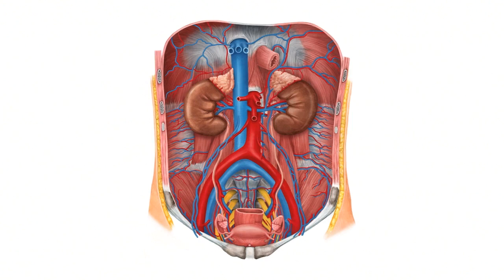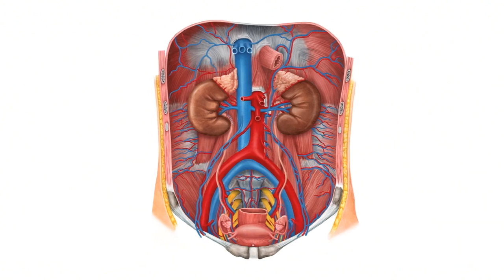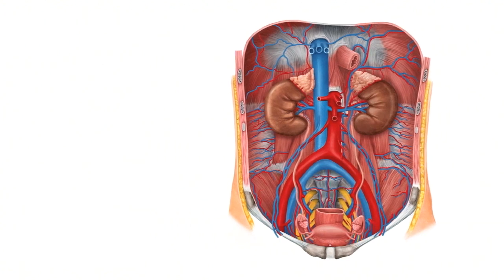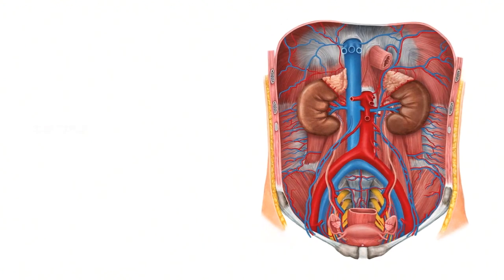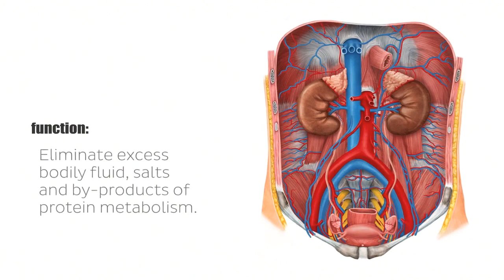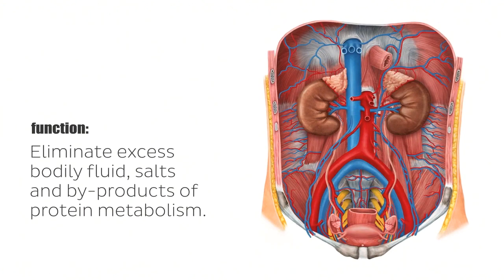Now the function of these bean-shaped organs includes eliminating excess bodily fluid, salts, and byproducts of protein metabolism. And in this tutorial, as I mentioned before, we will be discussing the general structure of the kidneys.